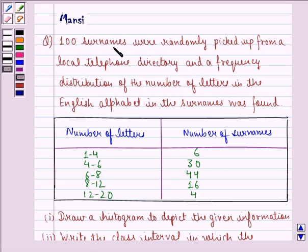The question says: 100 surnames were randomly picked up from a local telephone directory and a frequency distribution of the number of letters in the English alphabet in the surnames was found.